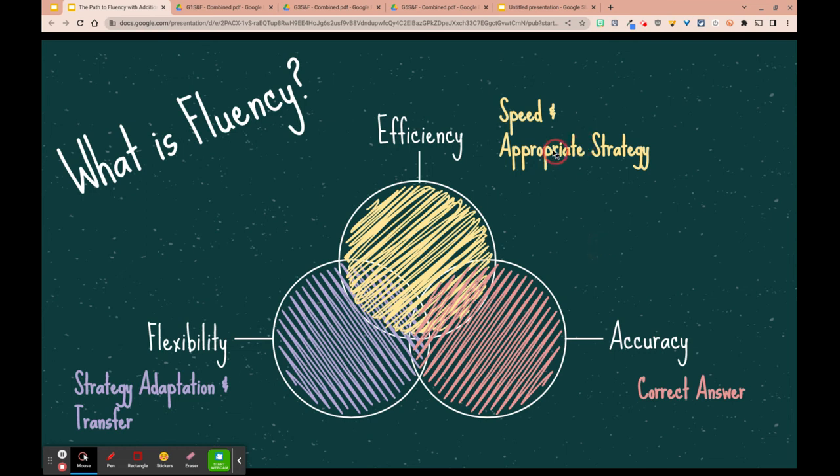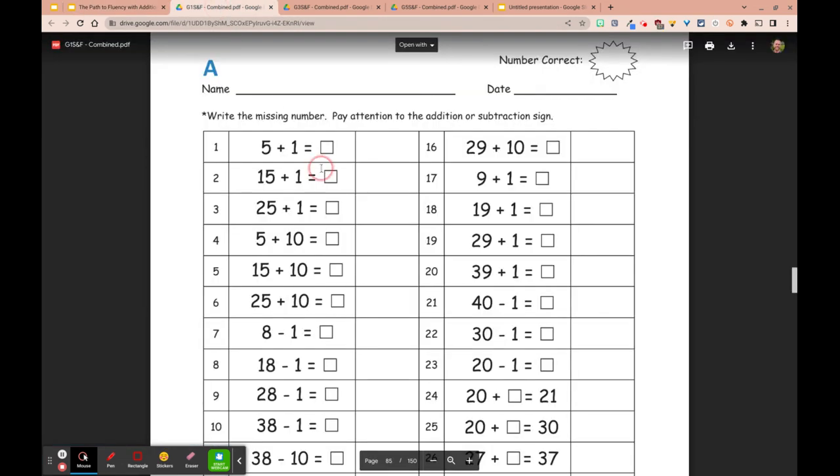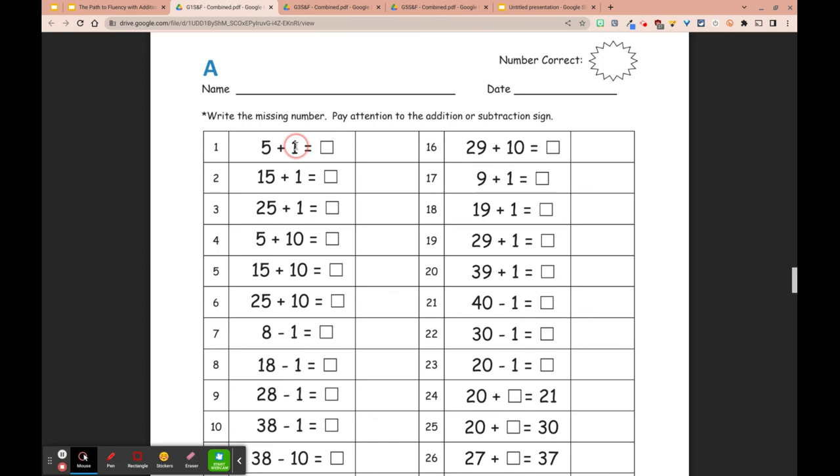So what we want to do is really bring attention to those strategies, and the sprints are actually full of different strategies. What we're going to do is talk about how we can use number talks prior to the sprint to have kids share strategies so that when they go to do the sprint, they're not just looking for speed and correct answers. They're seeing a pattern, seeing a strategy, and applying that over and over again. Hopefully what you don't end up having is kids only being able to get three problems correct, because prior to doing the sprint, you've already talked about the strategy kids might be using.